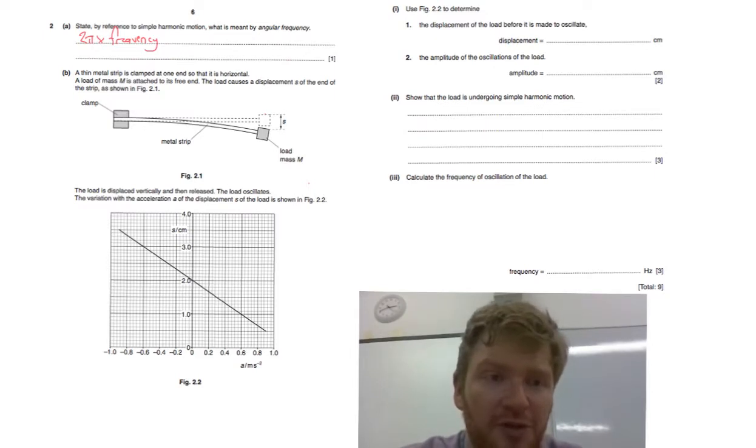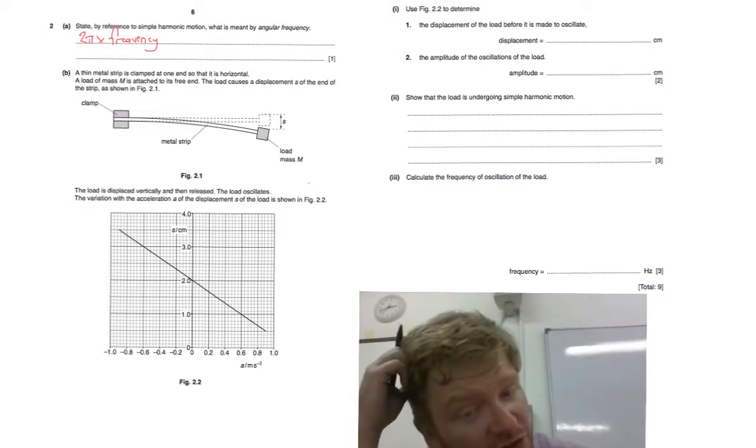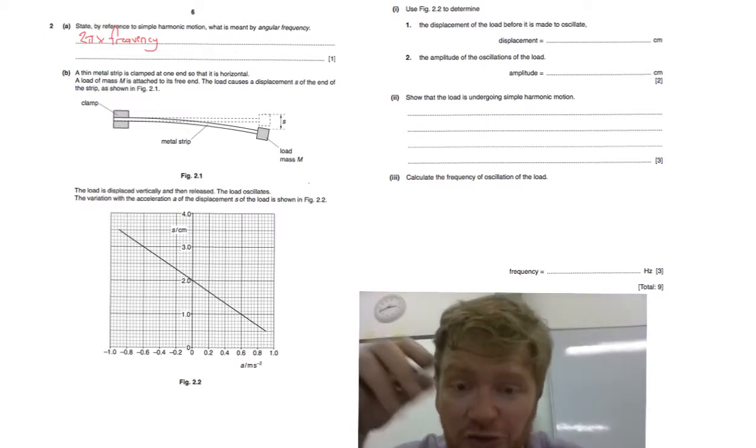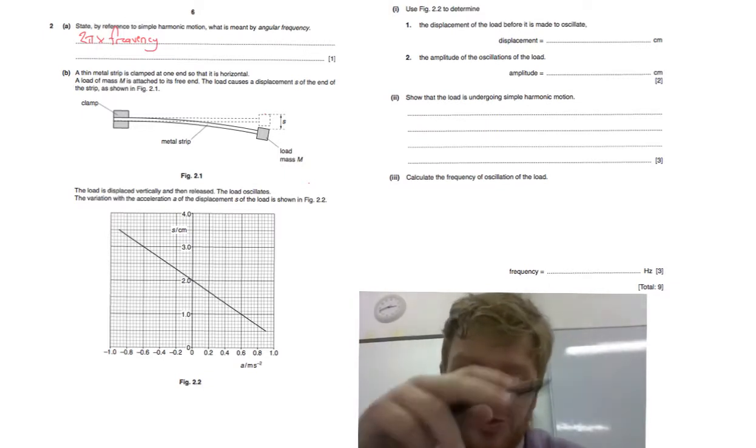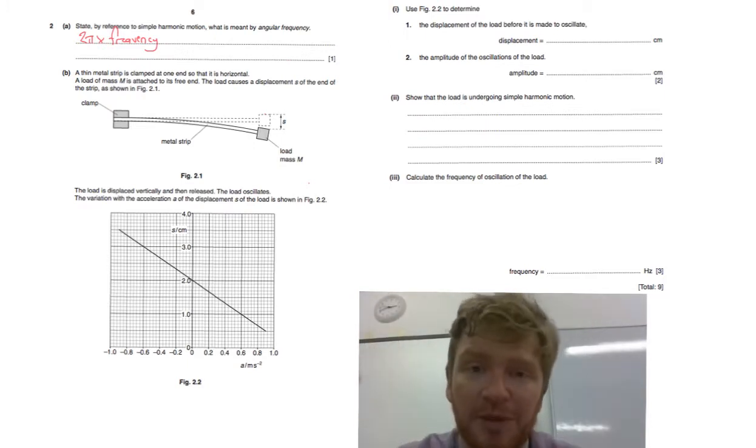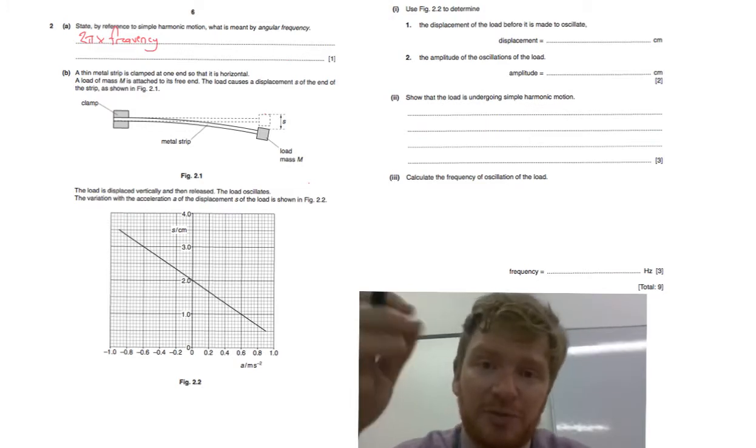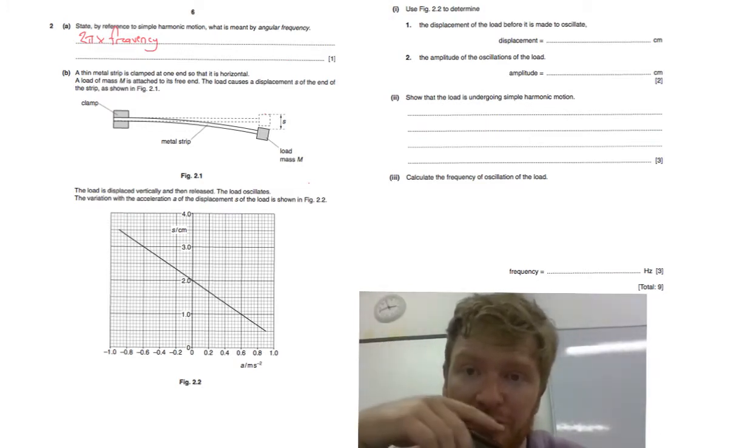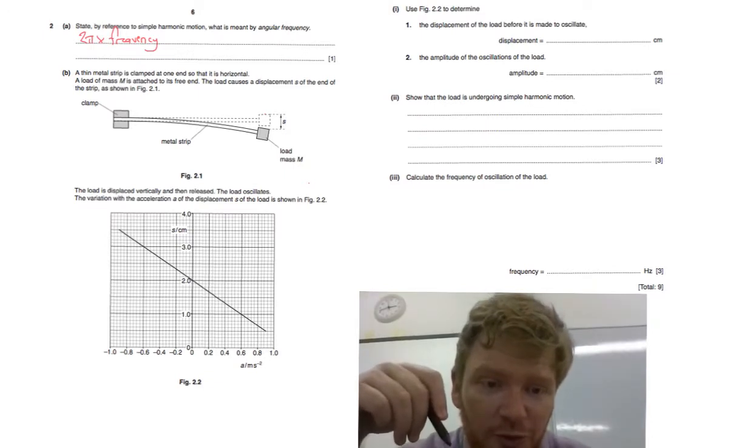Then we've got a thin metal strip is clamped at one end, so that it is horizontal. A load of mass M is attached to its free end, this causes displacement S in the strip. That's showing the figure 2.1. The load is displaced vertically, then released. The load oscillates. Variation in acceleration with displacement is shown in the figure. Now, really important, this should not be a curve, a sinusoidal curve, because this is showing how acceleration varies with displacement. So you're expecting it to be a straight line. That's what tells you it's SHM, because it's directly proportional to displacement.